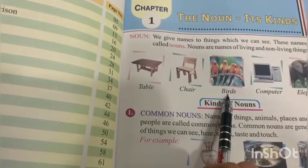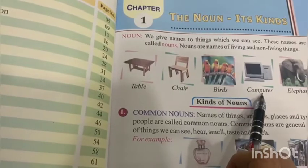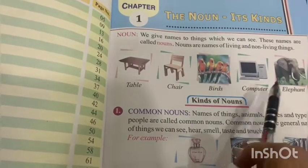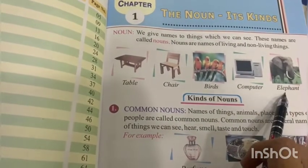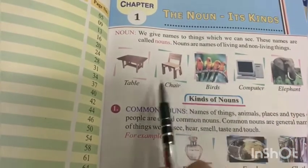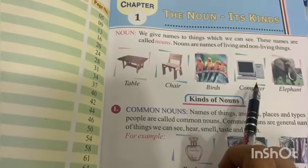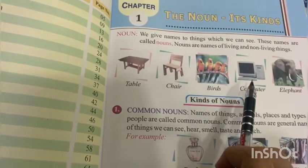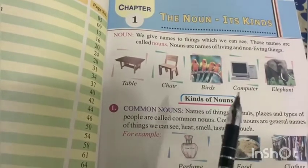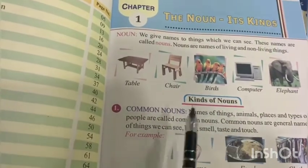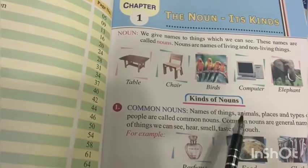Animals like birds, things like computers, animals like elephants — we are taking the names of these things, which means these all are nouns. So first of all, let's look at the kinds of nouns.